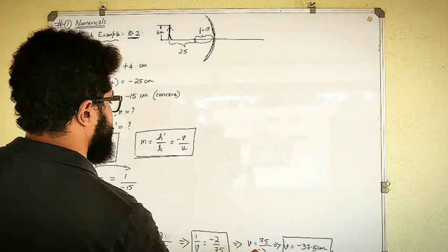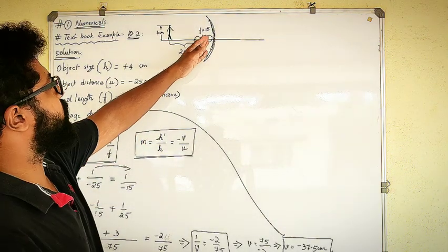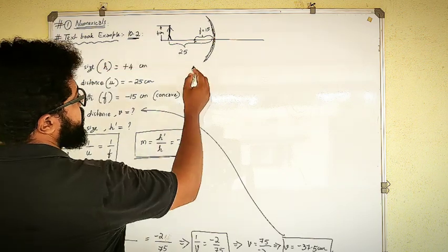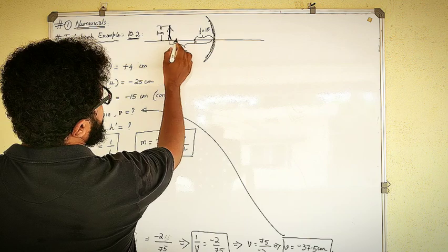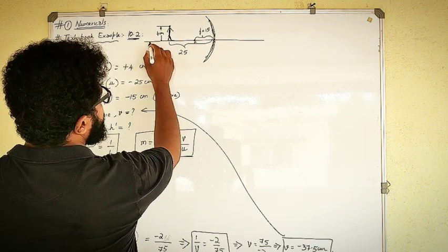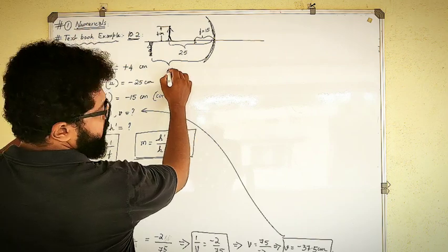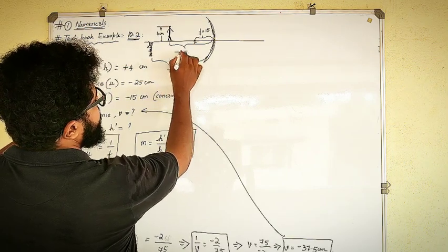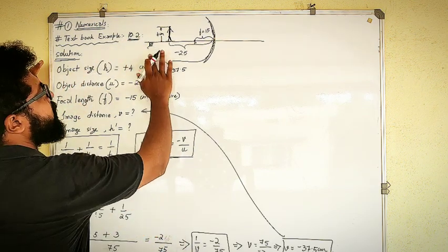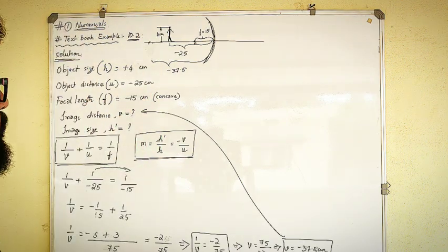So I have found the image distance: V = −37.5 cm. This means the image is formed 37.5 cm to the left of the mirror. The object was at minus 25 cm and the image is at minus 37.5 cm. I don't know the type of image yet, but this is the location of the image.